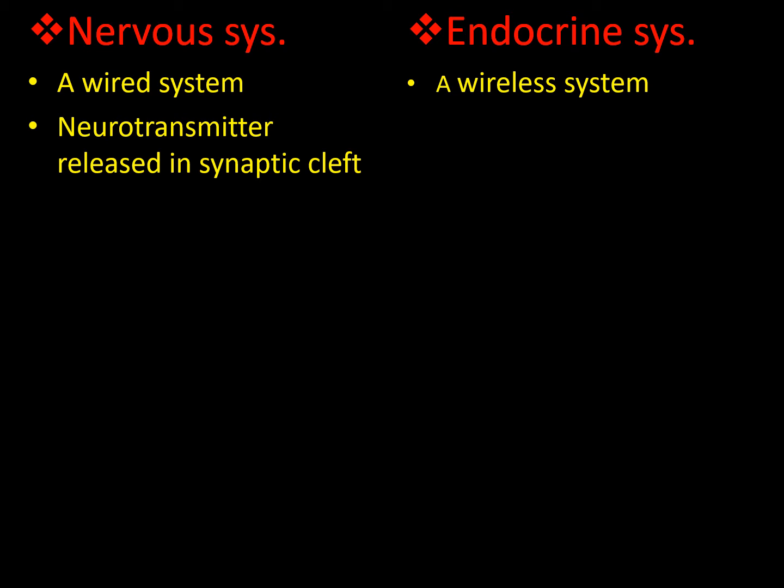The messenger of the nervous system — the transmitter of the impulse — is released from the terminations of axons in the synaptic cleft, the space between two neurons. The endocrine system is responsible for the release of another messenger called a hormone, which is released into the blood. Hormones are secretions of the glands composing the endocrine system, releasing their specific chemical messengers into the blood.